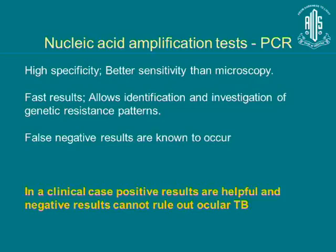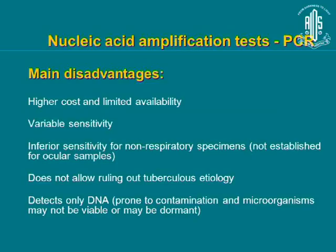PCR is a better test — it has high specificity, better sensitivity than microscopy, and provides fast results. It allows identification and investigation of genetic resistance patterns. False negative results are known to occur, but positive results are helpful clinically, and negative results cannot rule out tuberculosis. Main disadvantages are higher cost, limited availability, variable sensitivity, and inferior sensitivity for non-respiratory specimens such as ocular samples. It detects only DNA and does not allow ruling out tuberculosis etiology. Newer probes have been developed for ocular use, but they are not currently available commercially.